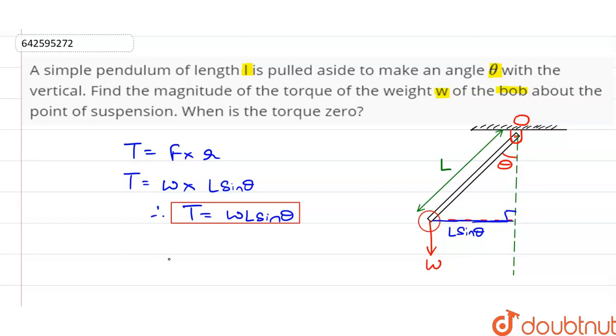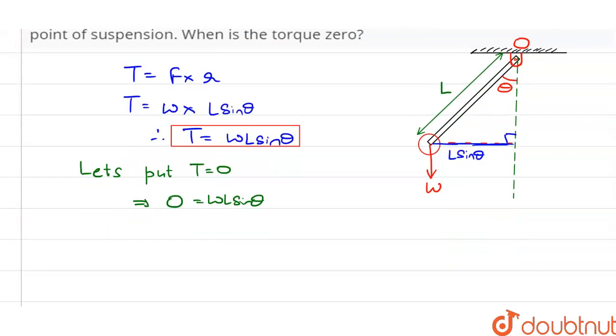In the second part, we are asked when is the torque zero? To find that, let's put T equal to zero. This implies zero equal to W L sin theta. This means that sin theta will be equal to zero.